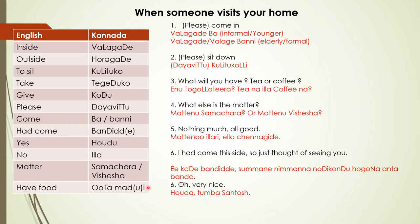Now, when somebody visits your home, the first thing we say is 'please come in.' So how do you say that in Kannada? Vala Gade Ba — if it is a younger person or informal way. Generally we say Vala Gade Banni — it is for elderly and also formal. Instead of Vala Gade, you can also say Vala Gade Banni.